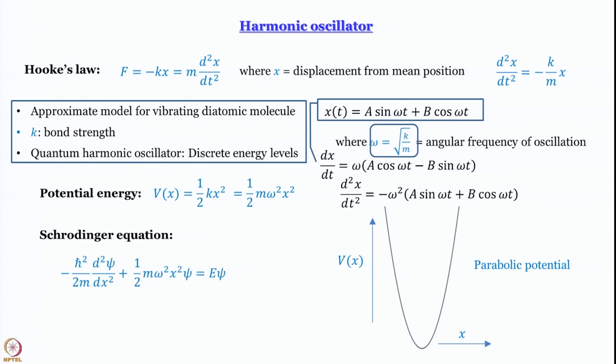The Schrödinger equation becomes: minus ħ²/2m times d²ψ/dx² plus half m ω² x² ψ equals E ψ. Usually we do not work with m but with the reduced mass μ, because it is a two-body problem — in a diatomic molecule like HCl the two atoms move with respect to each other. So instead of m we write μ, the reduced mass, and we will switch conveniently to μ when needed.